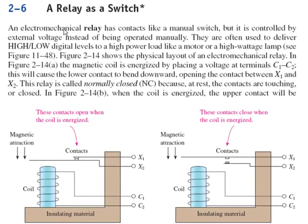So an electromechanical relay has contacts just like a manual switch but is controlled by an external voltage instead of being operated manually. They're often used to deliver high low levels to a real high power load like a high wattage lamp or a motor or anything that's drawing a lot of current. You want to use a relay because the contact can handle large amperage.